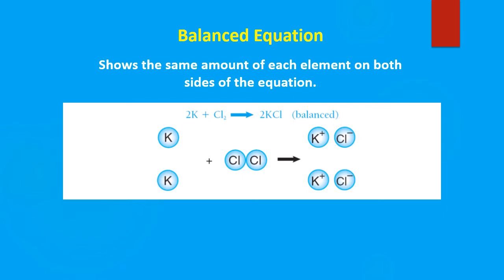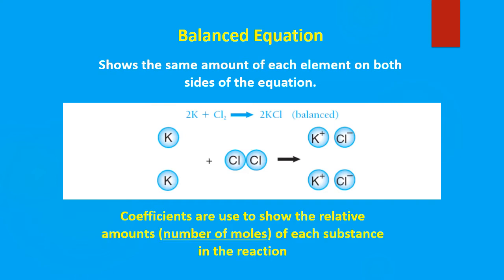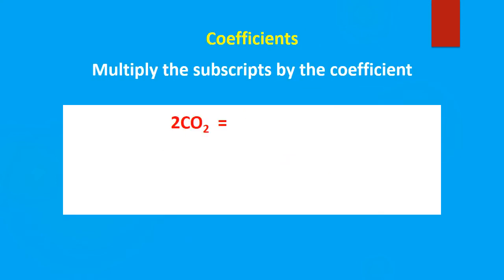Now these numbers at the front — what do they represent? They represent what we call coefficients. Coefficients are used to show relative amounts, but what we really mean is that they show the number of moles of each substance in the reaction. So when we talk about a chemical reaction occurring, we say potassium reacts with chlorine to form potassium chloride. But if it's not balanced, all we know is that potassium and chlorine react to give us potassium chloride — it doesn't tell us how much potassium and chlorine is used or how much potassium chloride is produced. That's the job of the coefficients — it tells us the relative amounts or the number of moles of each substance. And if there's no subscript present, remember that it is simply one.